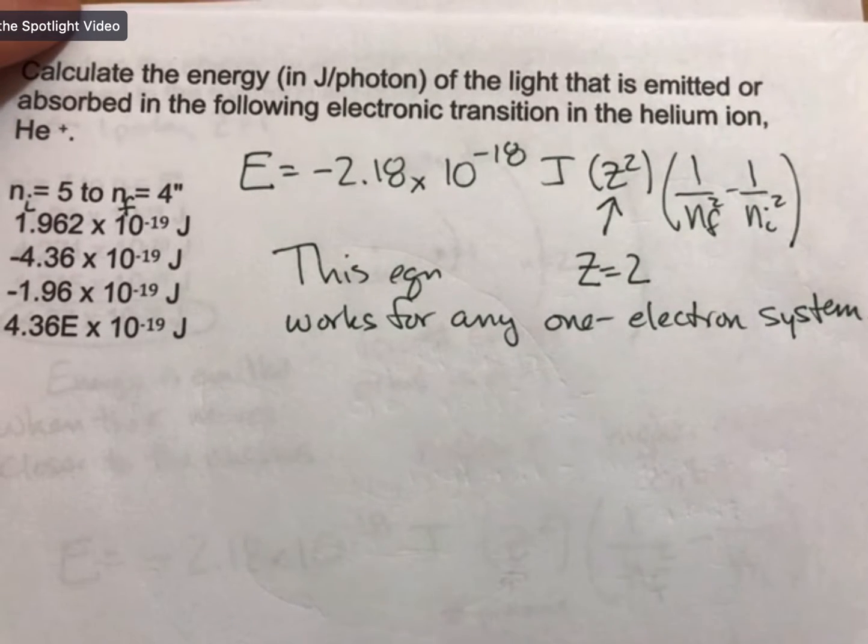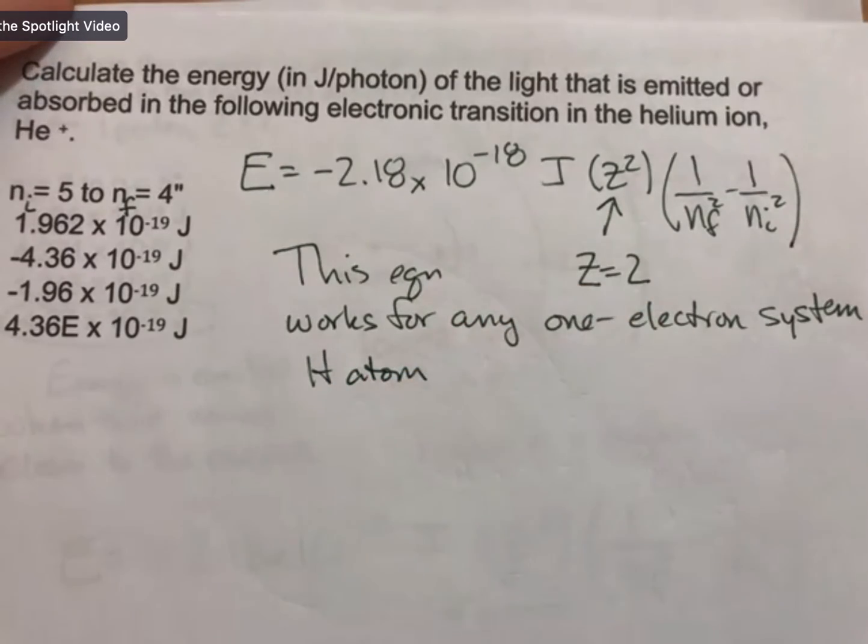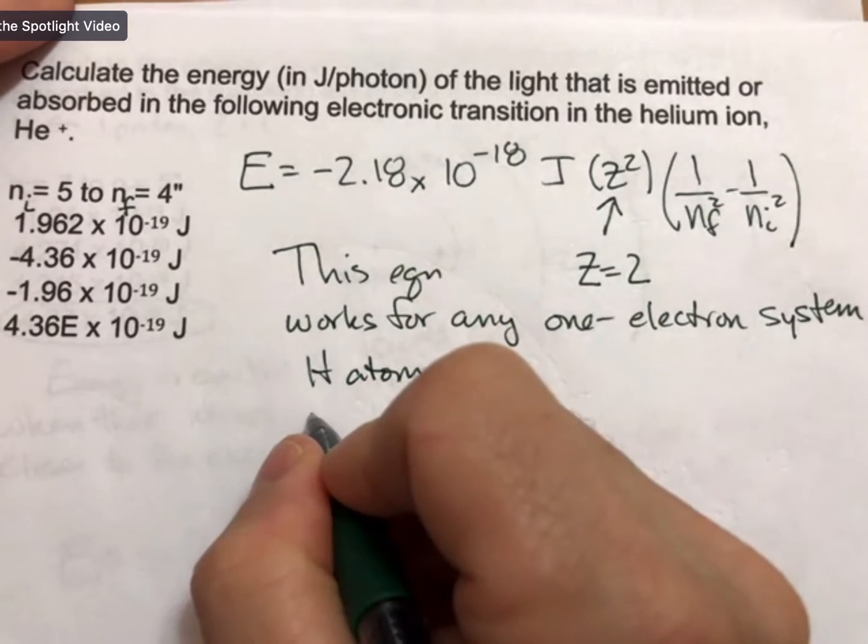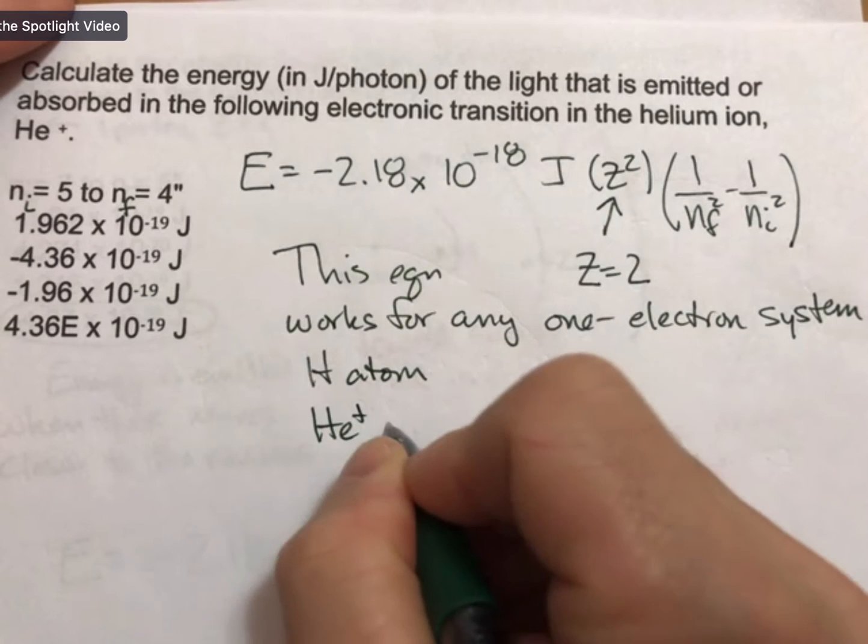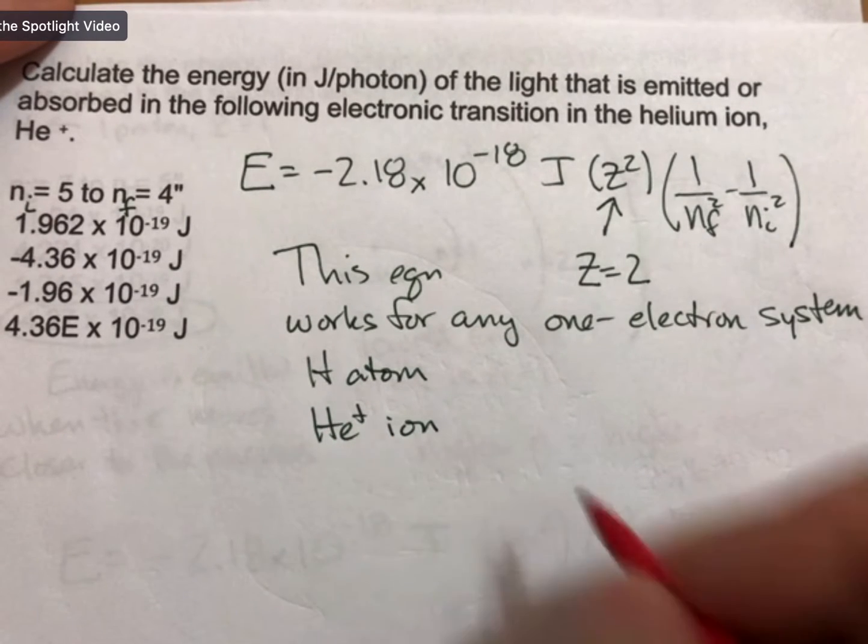And what I mean by that is it can be a helium atom. It can be a helium plus ion, because if we remember, a helium atom, good old position two on the periodic table, a helium atom has two protons.